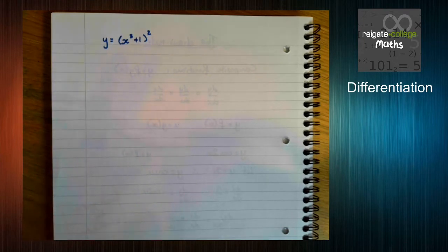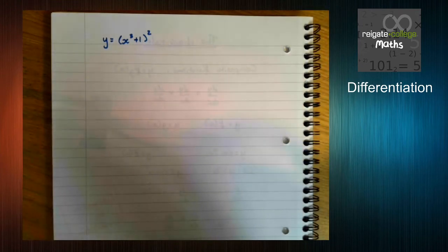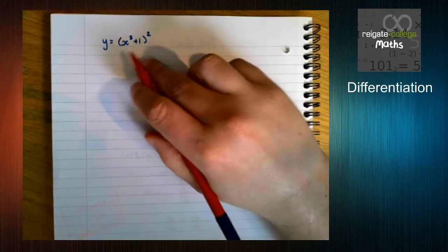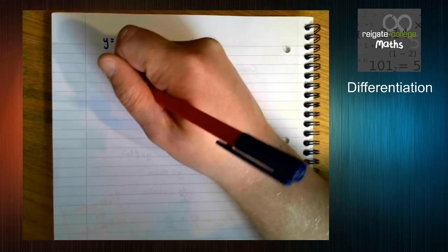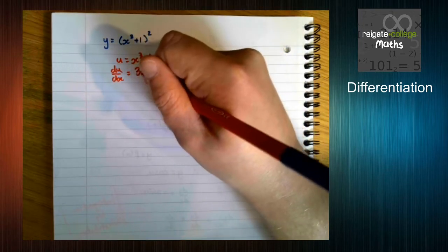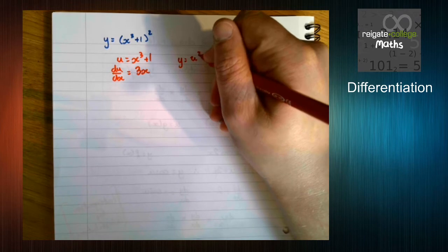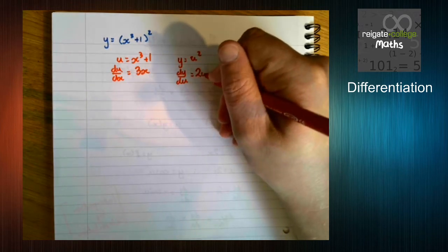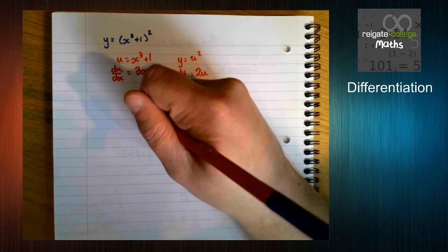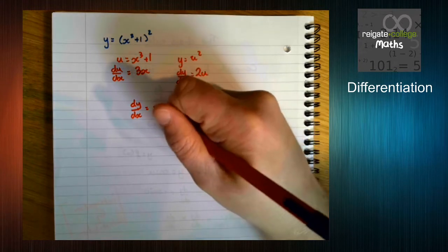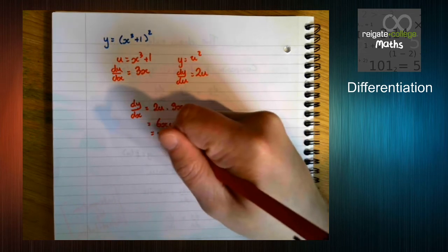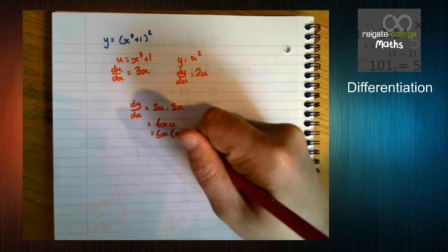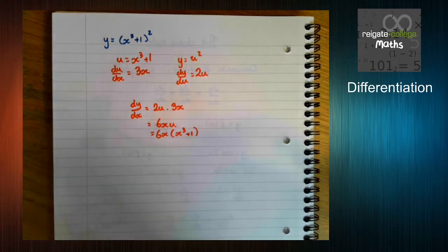So here we have x cubed plus 1 squared, the first example on our sheet. So obviously you can go through the long process of identifying: u is x cubed plus 1, so du/dx is 3x squared. Y equals u squared, so dy/du is 2u. Multiplying the two together, we get 2u times 3x squared, which is 6x squared u, which is 6x squared times x cubed plus 1. So the longer method.